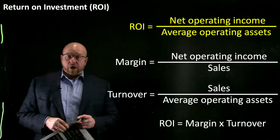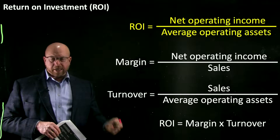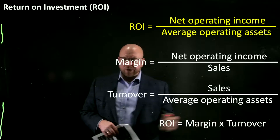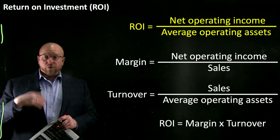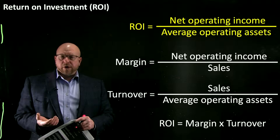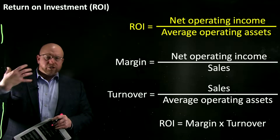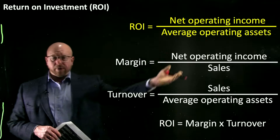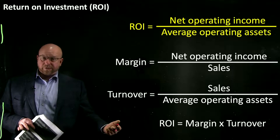The overall formula for ROI — net operating income divided by average operating assets — can actually be expressed using margin and turnover. Margin, or net profit margin: you probably already know that gross profit margin is gross profit divided by sales revenue. Net profit margin is your bottom line net income divided by sales revenue. So your margin is simply your operating income divided by sales, often expressed as a percentage.